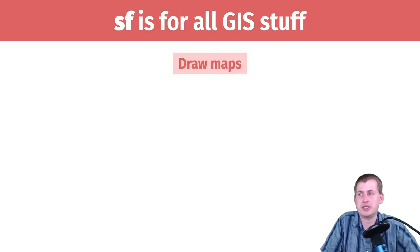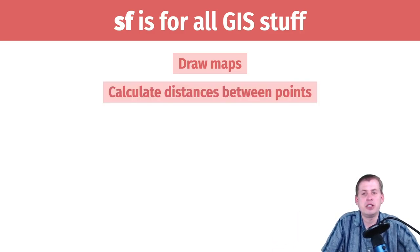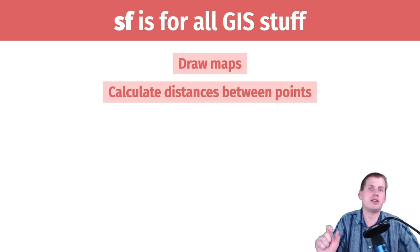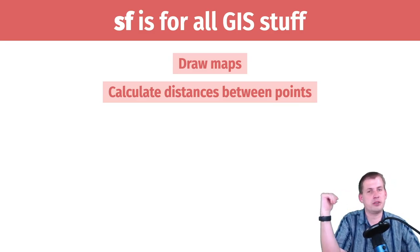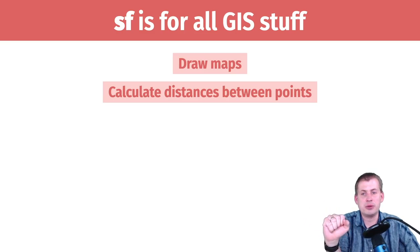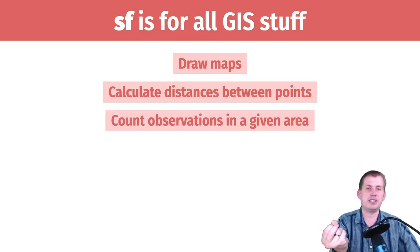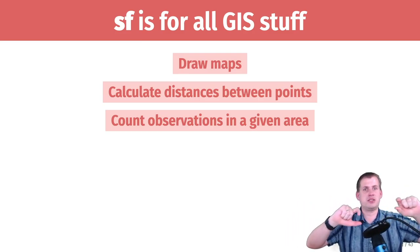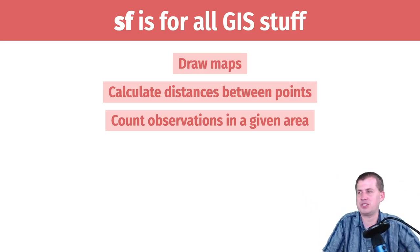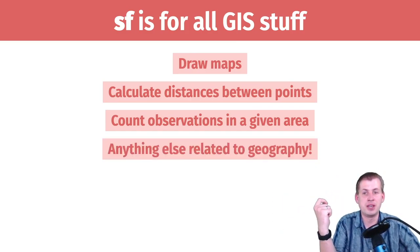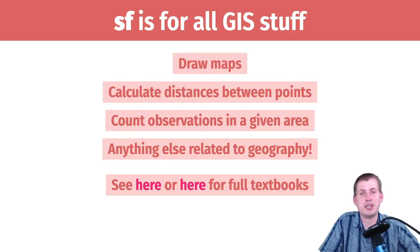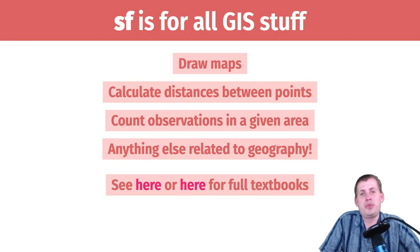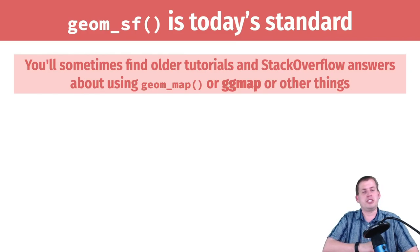The SF package is fairly new — only released in the past three or so years — but you can do all sorts of GIS stuff with it beyond drawing maps. You can calculate distances between points and choose how to calculate them, whether following a great circle route along the curvature of the earth or as-the-crow-flies. You can count observations in a given area — for example, draw a 30-mile radius around a city and count how many rat sightings are in that area. There are actually two textbooks being written for how to use SF for GIS work — click those links if interested.